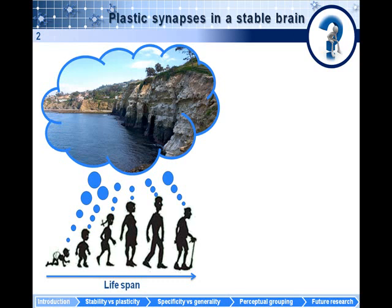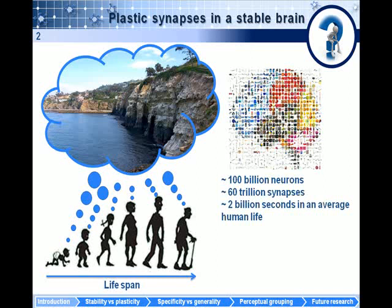One of the major themes that has interested me throughout my research, starting from the beginning of my PhD, is how do we learn stable memories? How are memories first formed and then consolidated and kept more or less intact throughout the lifespan of an organism? This is a fairly important and difficult question, especially if you consider what kind of hardware biological organisms have at their disposal in order to store information. A typical human brain has around 100 billion neurons and about 60 trillion synapses.